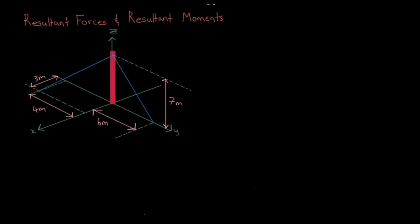Ok, now let's do a three-dimensional example. Here we have a pole with two cables attached to it. The first cable pulls on the pole with a force of 300N, and the second cable pulls with 500N.